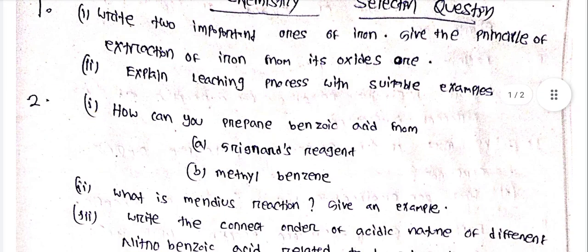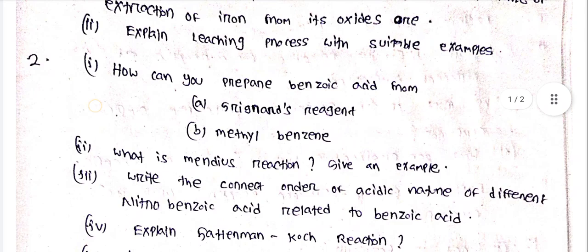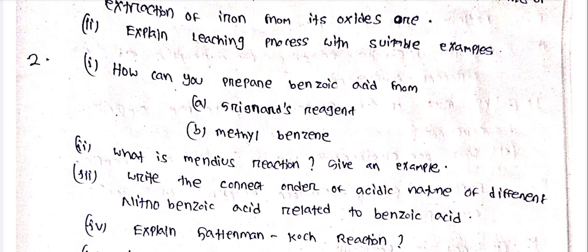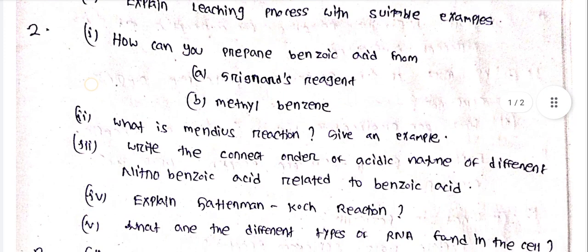Question double-double, three of them, so mark on this question. Explain leaching process with suitable examples. How can you prepare benzoic acid from Grignard's reagent of methyl benzene?